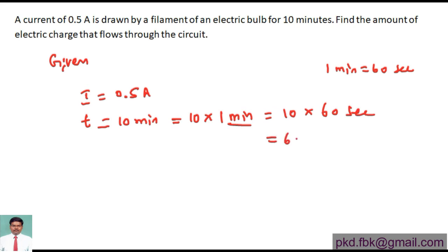Find the amount of electric charge, so Q I have to calculate. I is equal to the rate of flow of charge Q by t. So Q is equal to current into the time.